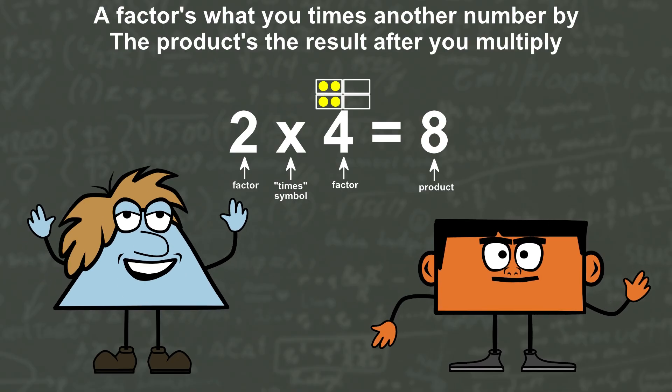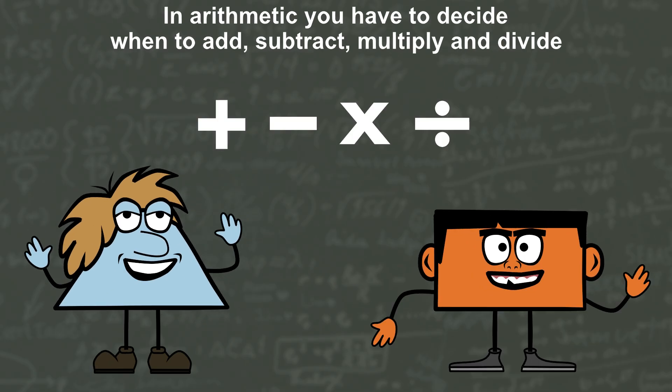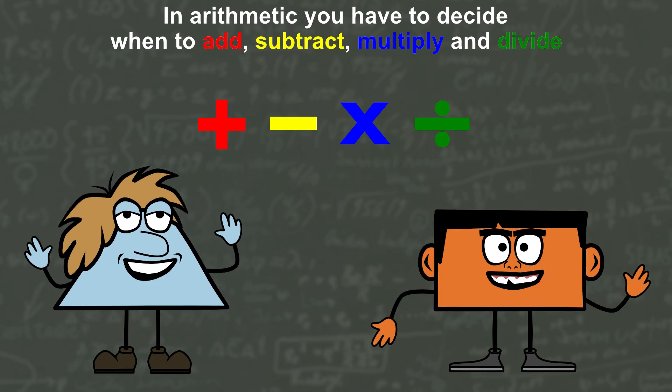A factor's what you times another number by, the product's the result after you multiply. In arithmetic you have to decide when to add, subtract, multiply and divide.